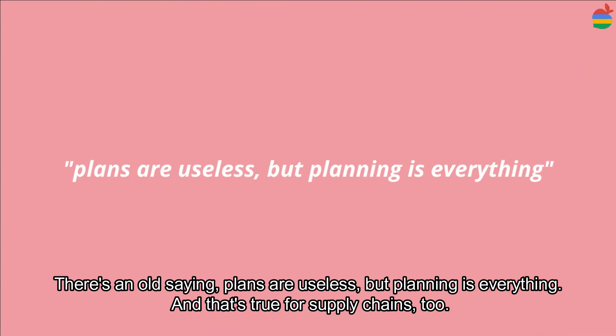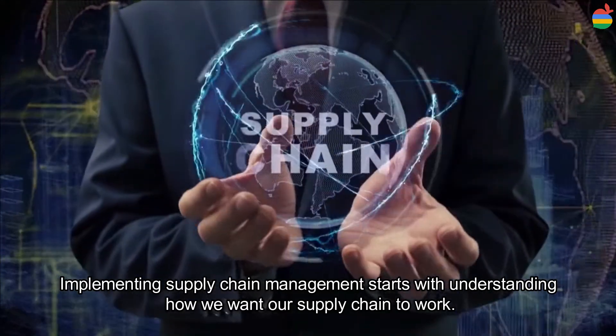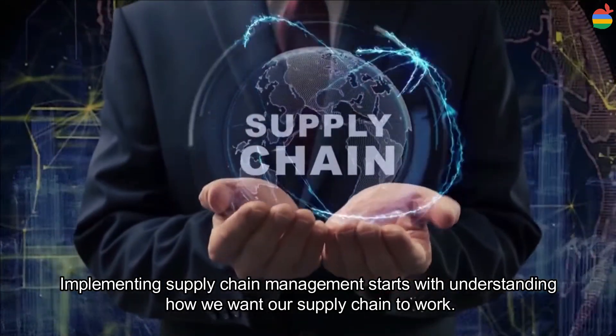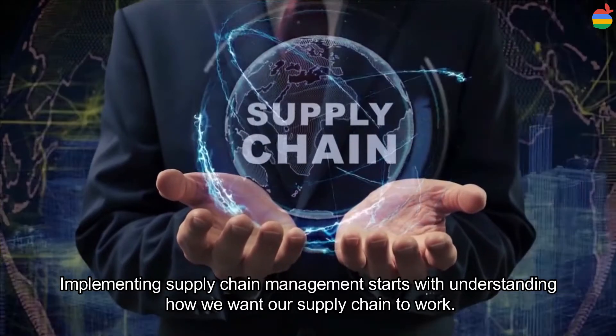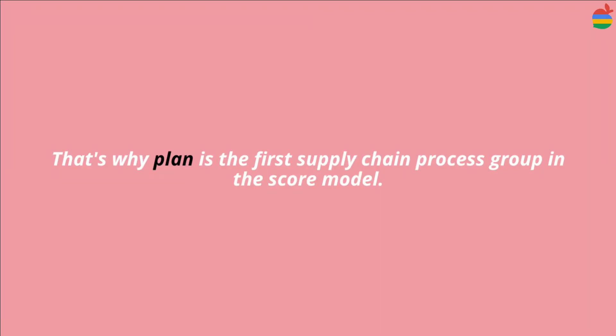There's an old saying: plans are useless, but planning is everything — and that's true for supply chains too. Implementing supply chain management starts with understanding how we want our supply chains to work. That's why Plan is the first supply chain process group in the SCOR model.